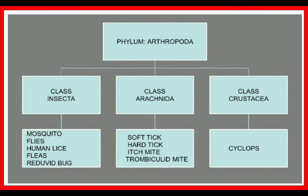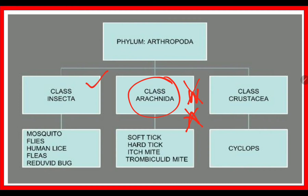The phylum Arthropoda is classified as Insecta, Arachnida, and Crustacea. As a mnemonic: insects usually fly and have antennae, but both the wings and antennae are actually absent in Arachnida — remember 'Arachnida, no wings, no antenna' — whereas Insecta and Crustacea will have wings and antennae.